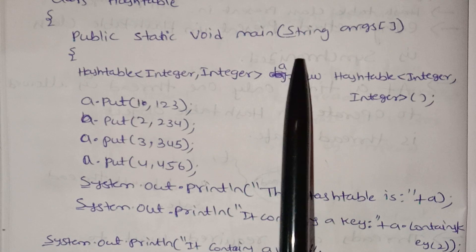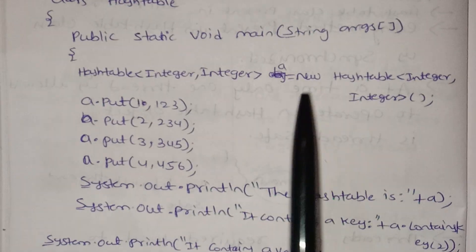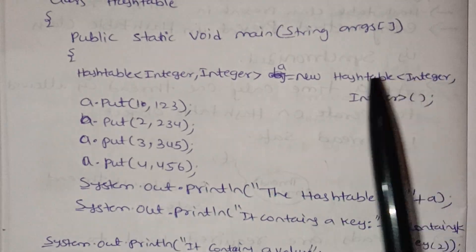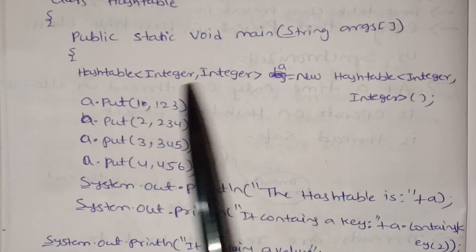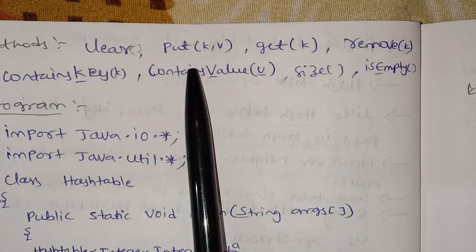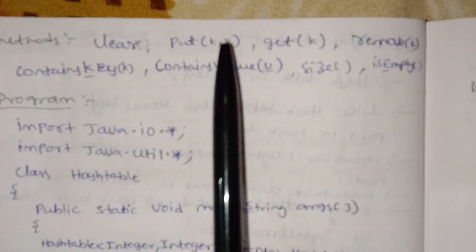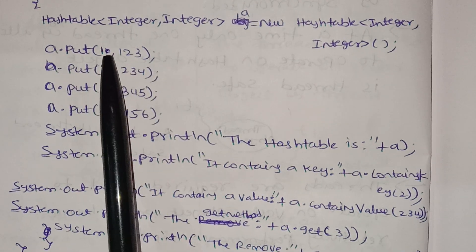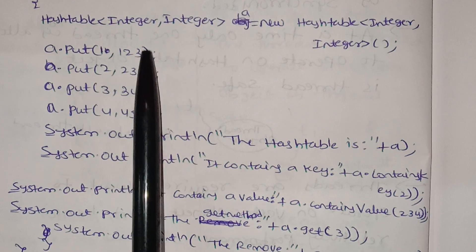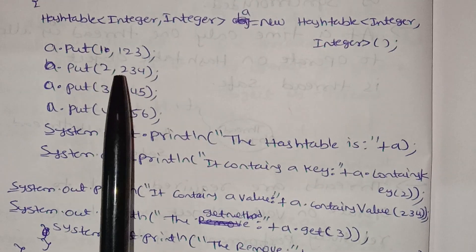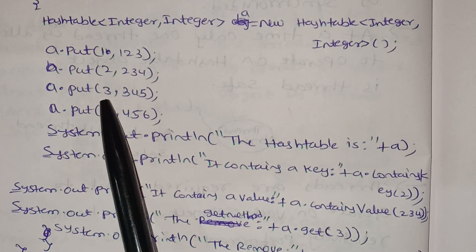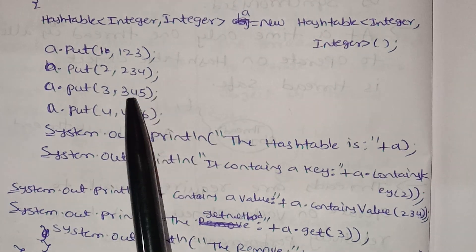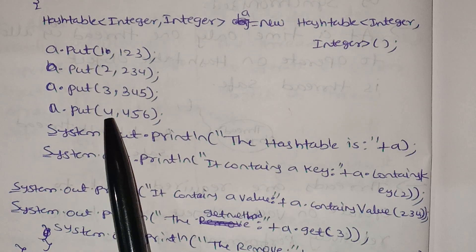We can store values by calling the put method. Here is our Hashtable. I will show you the method: put(K, V). The key is K and the value is V. For example: a.put(1, 1), a.put(2, 2), a.put(3, 4), a.put(4, 5), a.put(5, 6).